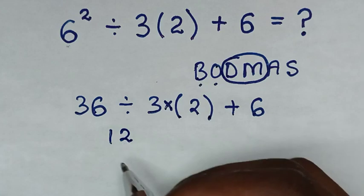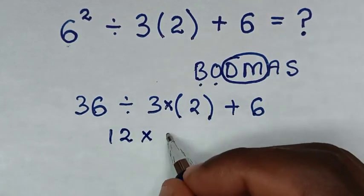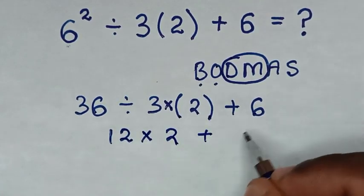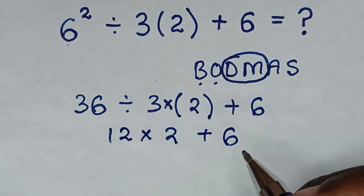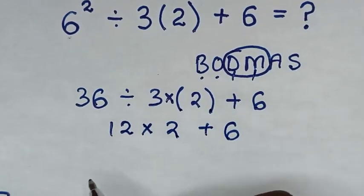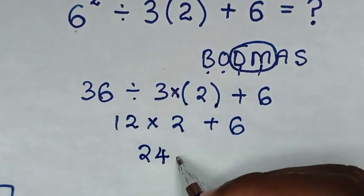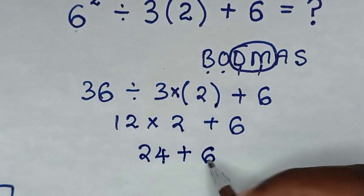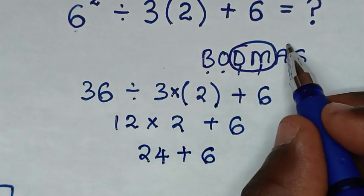Then times this 2, then plus 6. So after I deal with division, we deal with multiplication of 12 times 2. It is 24, then plus 6.